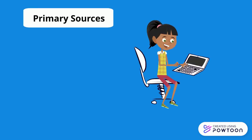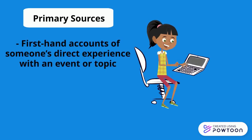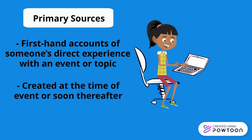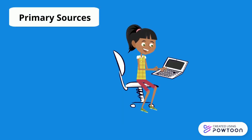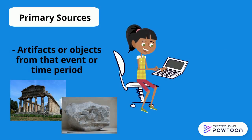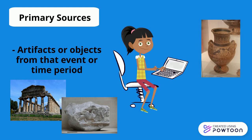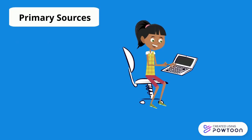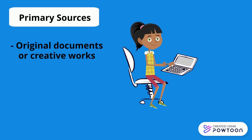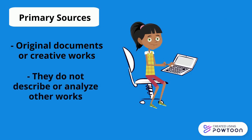Primary sources are first-hand accounts of someone's direct experience with an event or topic that are created at the time or soon after. Primary sources can also be artifacts or objects from the event or time period. They are original documents or creative works, which means that they do not usually describe or analyze other documents.